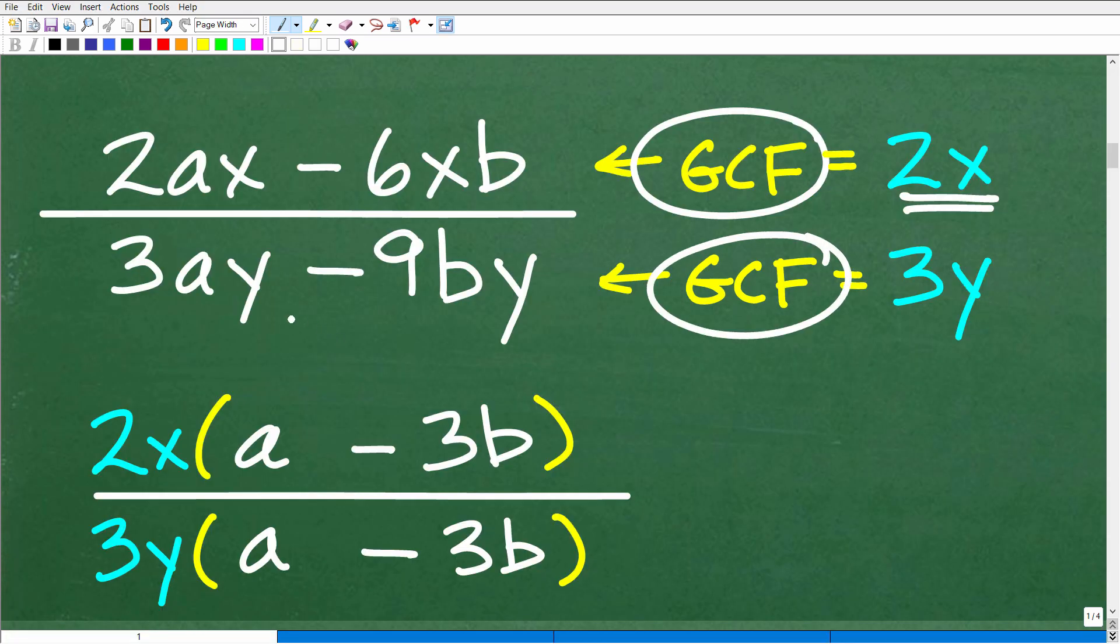So the GCF, again, down here in the denominator is 3y. You can kind of see they have a 3 and a y. Then 9 has a 3, and we have a y right here. So we're going to factor out the GCF. So the numerator is going to be 2x. That's our GCF. Remember, when you're factoring out the GCF, it's always going to be in the form of the GCF times whatever is left. So if you're confused, just take that GCF and multiply back in and see if you get back to the original problem.